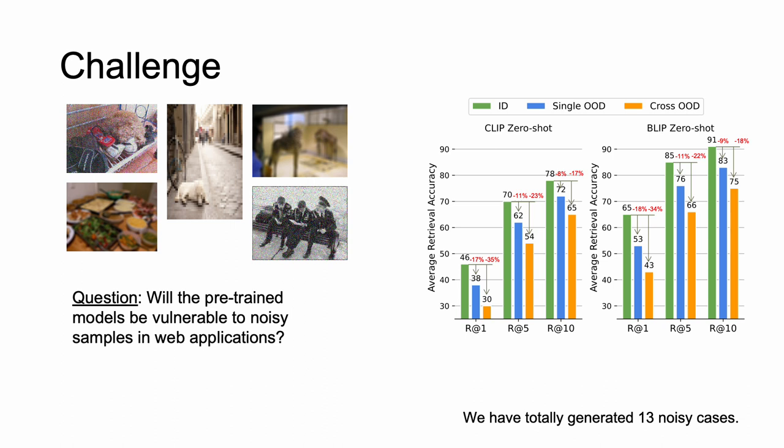And after this, we did an extensive experiment to analyze the performance drop of two pre-trained models, CLIP and BLIP, in image-text out-of-distribution retrieval tasks. And based on this preliminary study, we can answer this question with a yes.